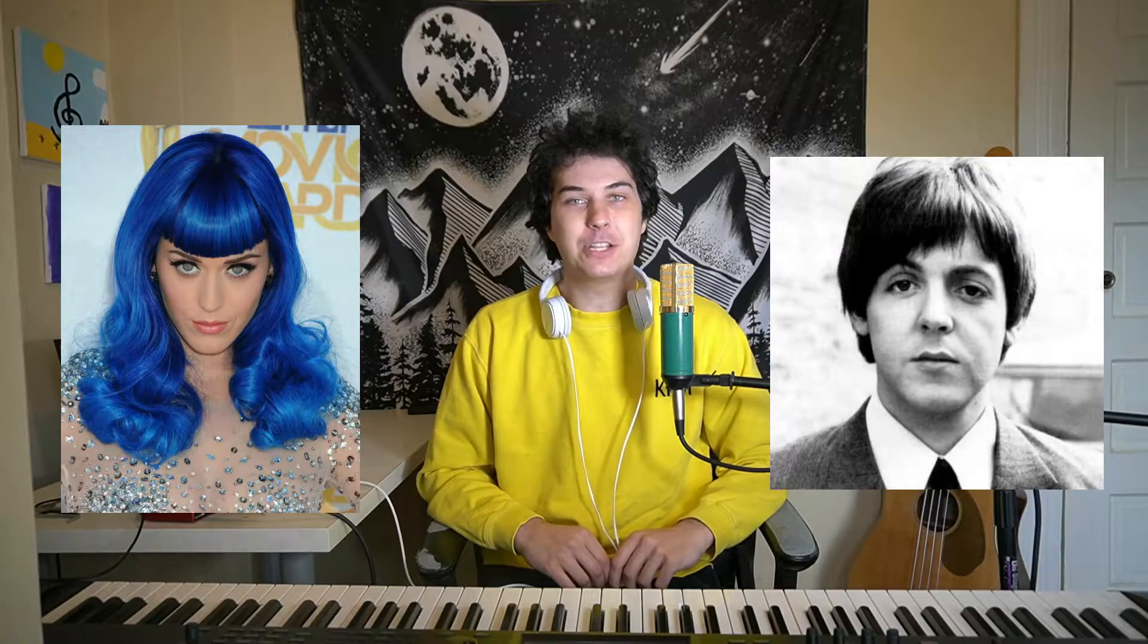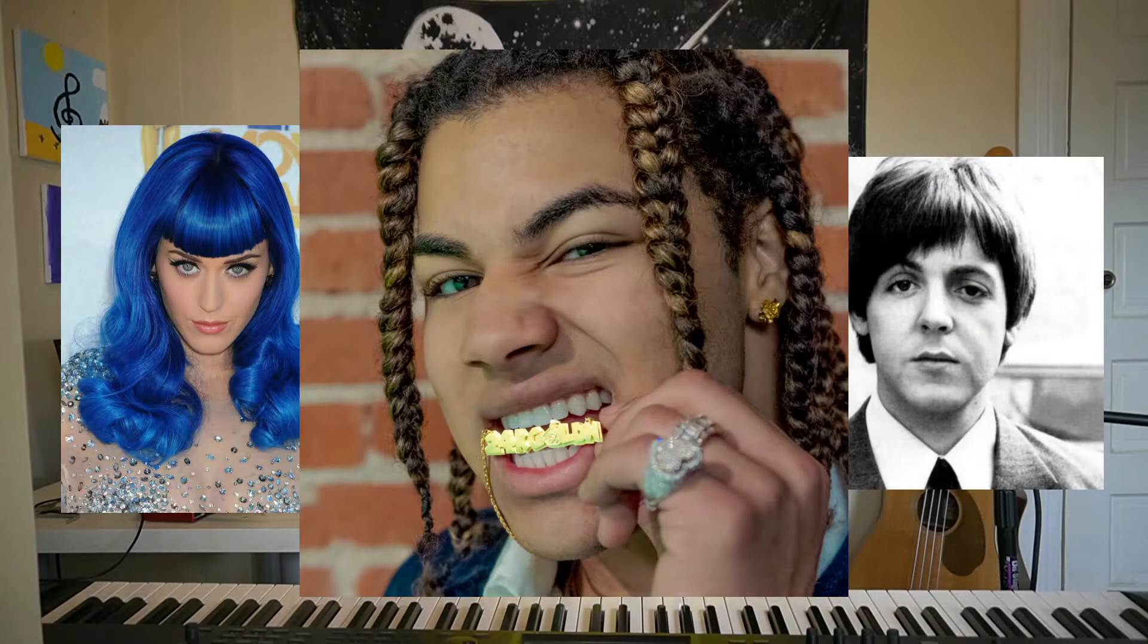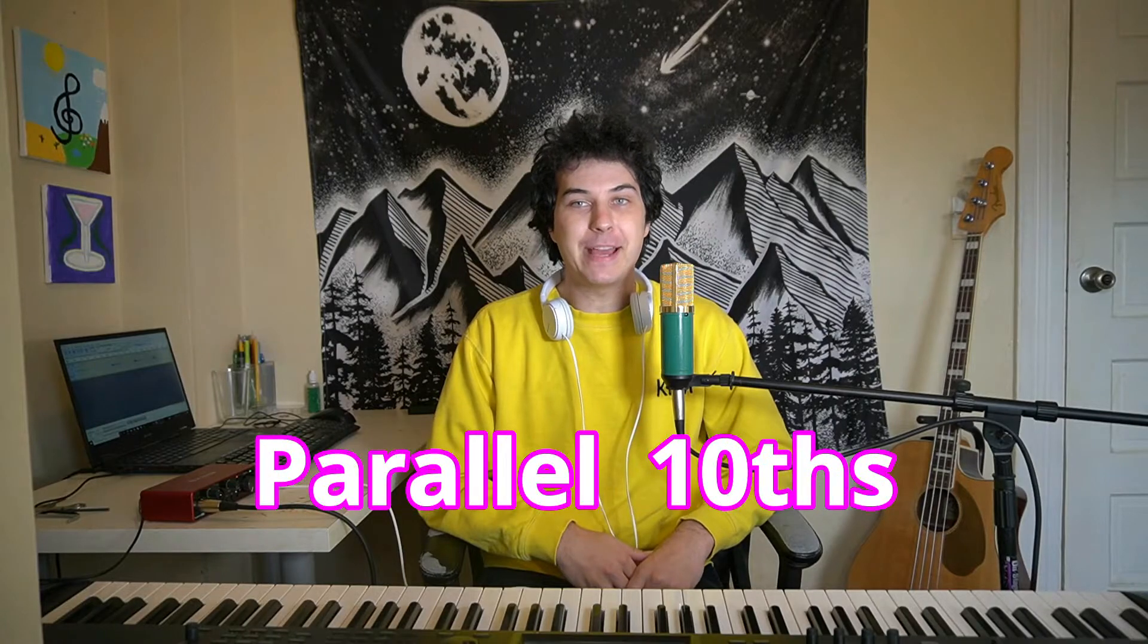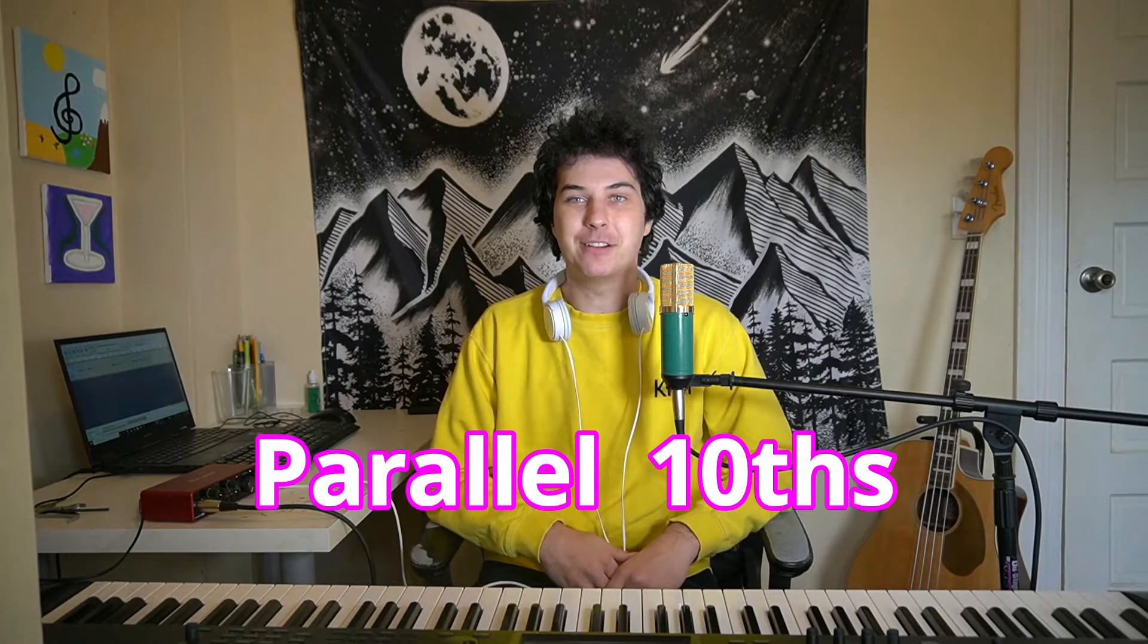What do Katy Perry, The Beatles, and 24K Golden all have in common? They all use this cheap trick called parallel tenths that makes their music sound better.